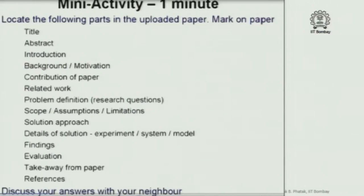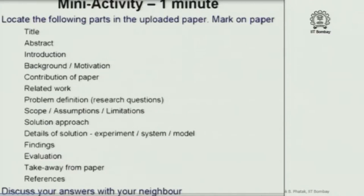Identify the title, abstract, introduction, and background motivation. Where do you see the contribution of the paper? It may be spread across multiple sections. Where is the related work described? Where is the problem definition? Where do you see the scope, assumptions, and limitations? Where is the solution approach? Where are the details of solution, findings, evaluation, and any clearly identified takeaways? Just mark on the paper very quickly where you find each piece of information.